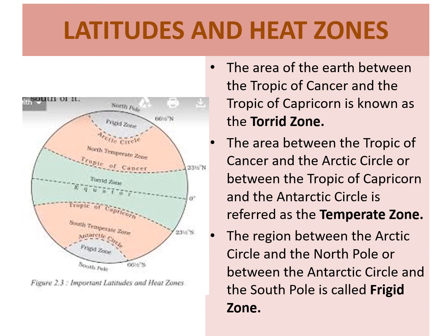The second zone is the Temperate Zone. Temperate means a climate which is not very hot and not very cold — it means moderate temperature. This zone lies between the Tropic of Cancer and the Arctic Circle in the Northern Hemisphere, and between the Tropic of Capricorn and the Antarctic Circle in the Southern Hemisphere. This zone gets the slanting rays of the sun, as the angle of the sun's rays decreases towards the poles, resulting in moderate temperature.